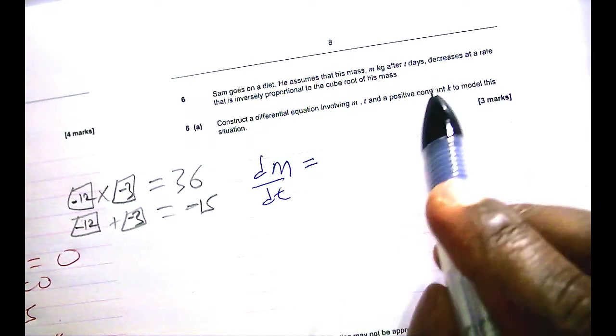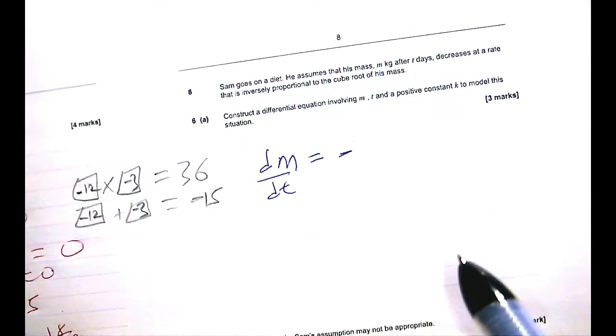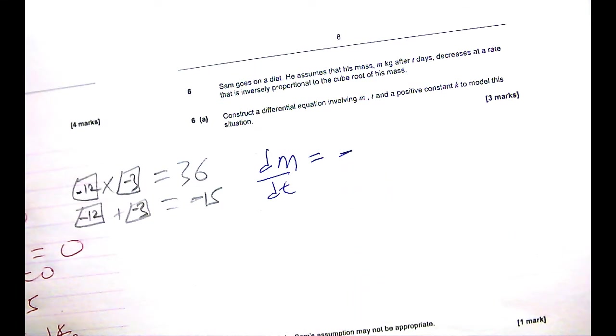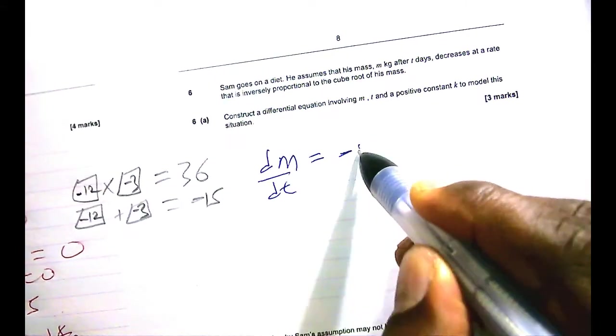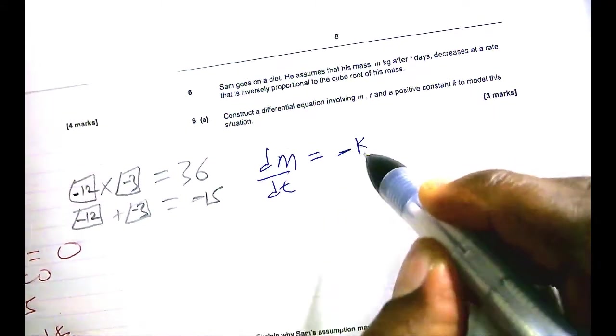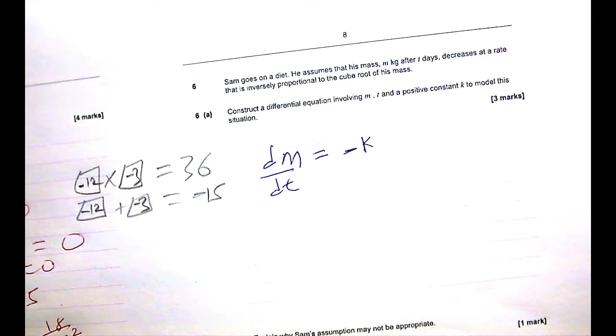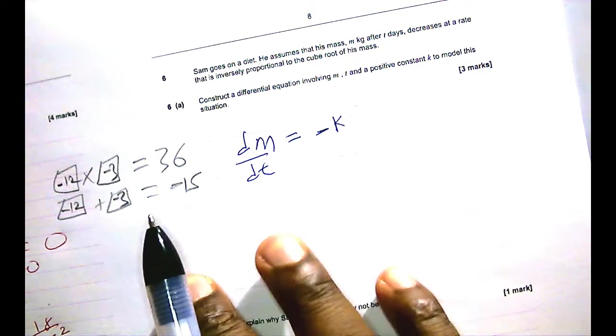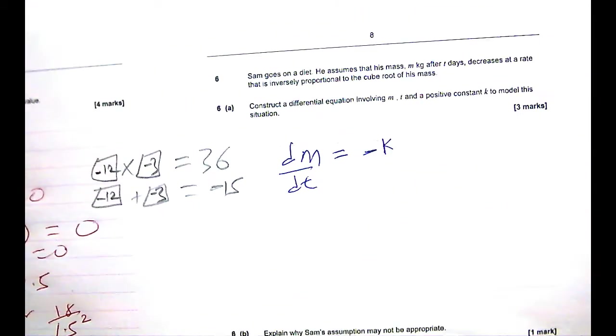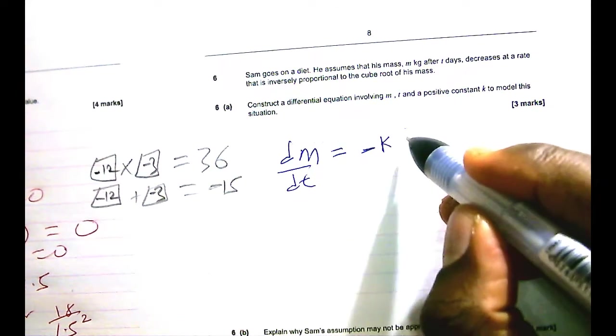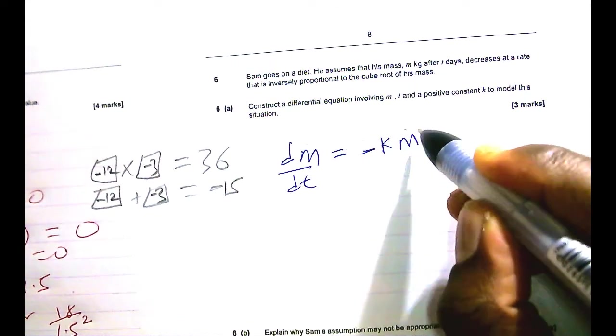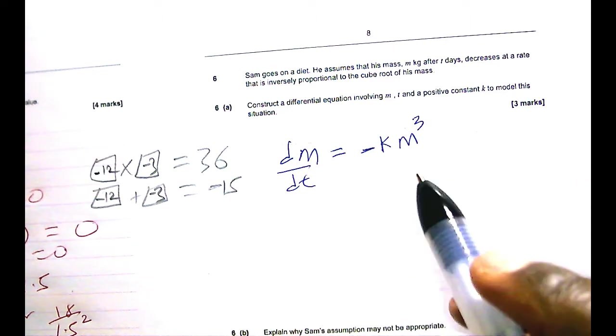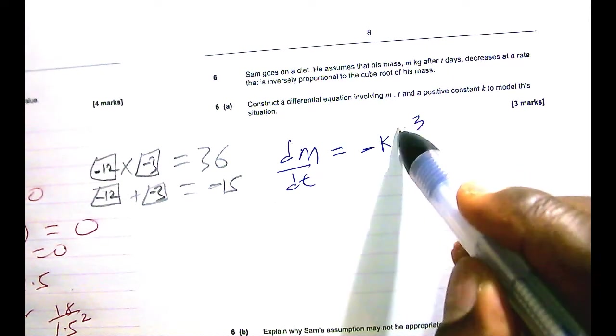And because it decreases, it has to be negative at a rate that is inversely proportional. So because it's inversely proportional, I'm just going to put a k first, which is just a factor, a coefficient of the proportionality. Now, let's talk about what it's proportional to, or what it's inversely proportional to: to the cube root of his mass. So if it had been directly proportional, I'm going to have the mass here with a 3 on it, cube root. But it's not directly proportional. It's inversely proportional. So that should go underneath like that.